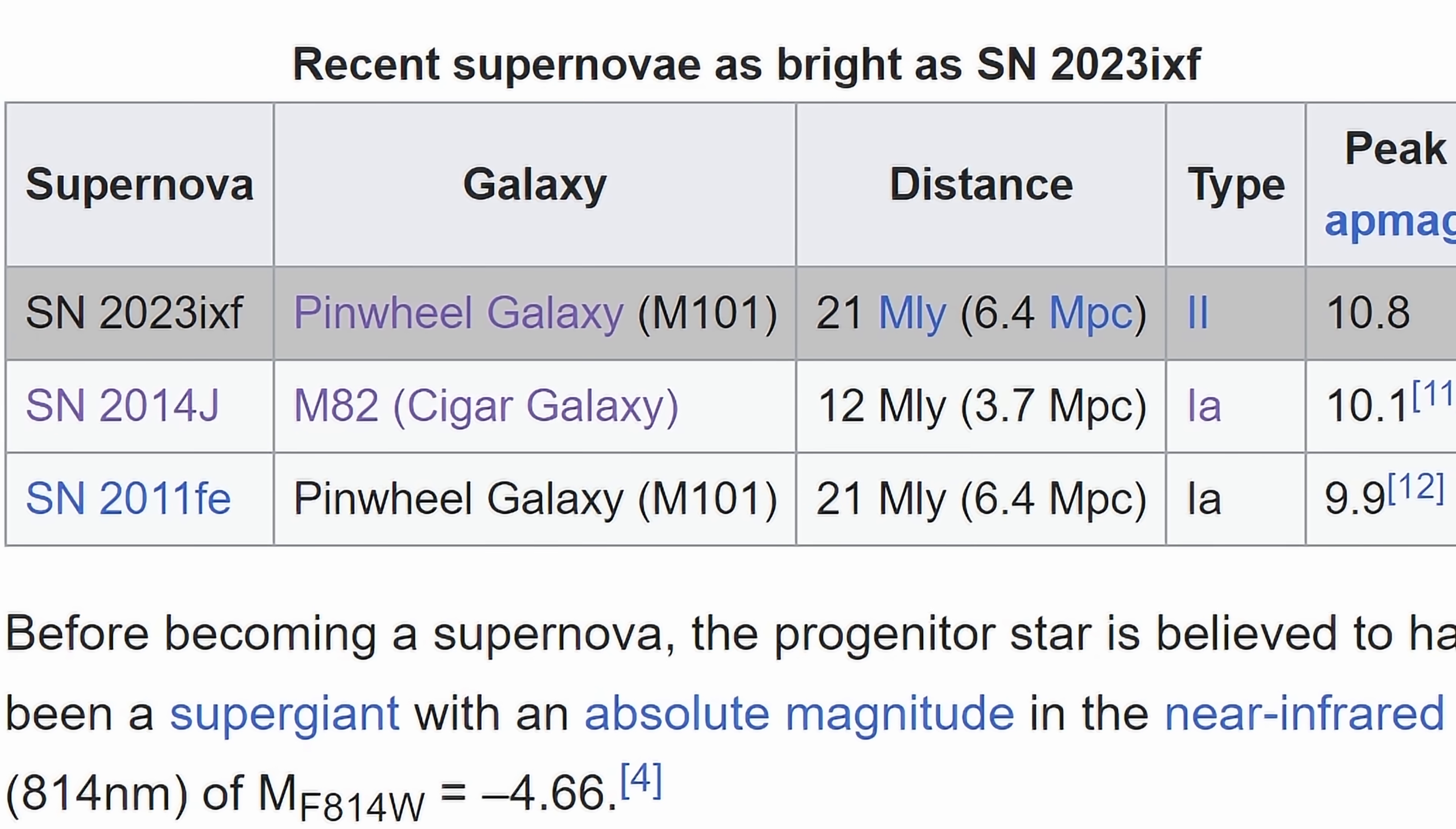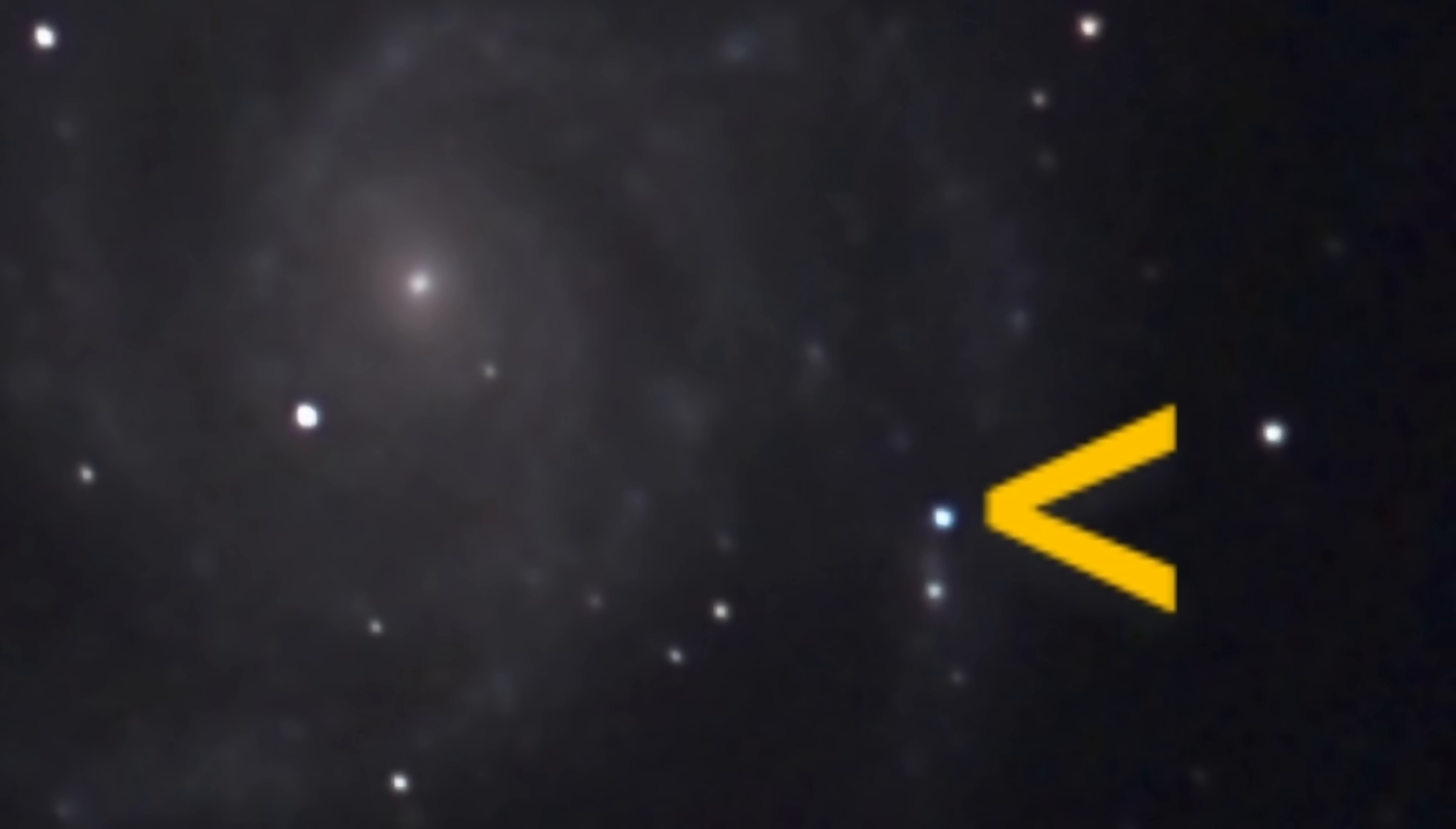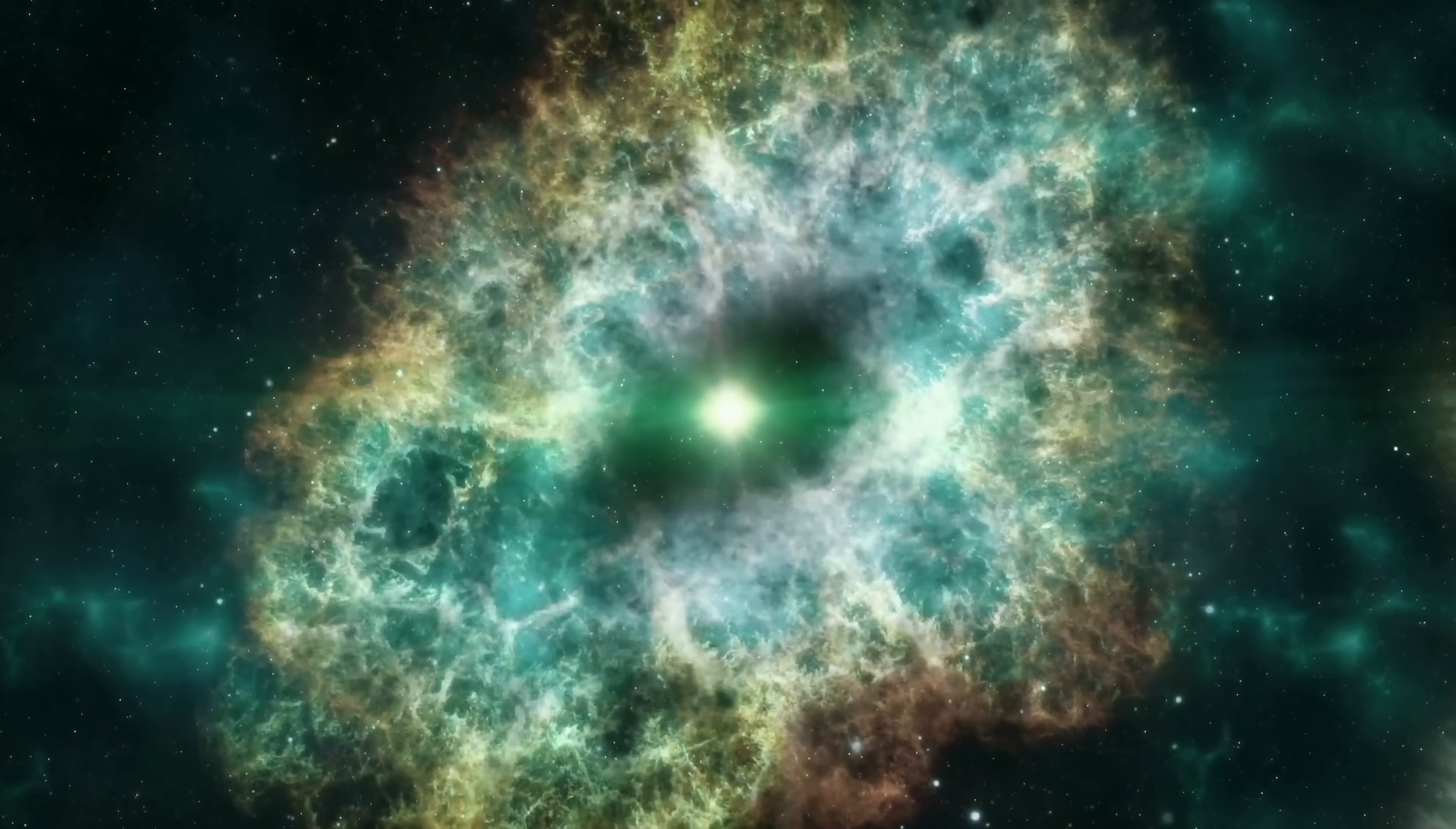First of all we know that this is the brightest supernova in the last 20 or so years. It reached the magnitude of 11 roughly around June 10th of 2023, which means that it was technically visible as a somewhat dim star if you were to observe this with a relatively small telescope. It was also confirmed to be a type 2 supernova, which is of course a collapse of a relatively massive star that usually leaves behind either a neutron star or a black hole.